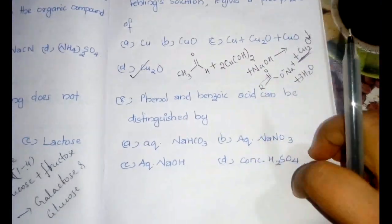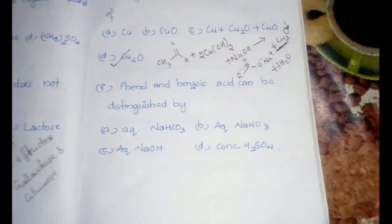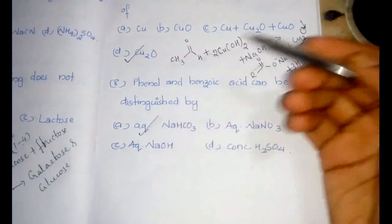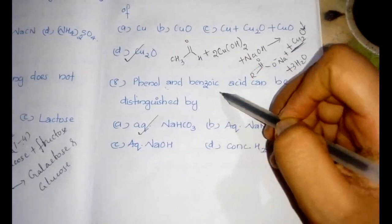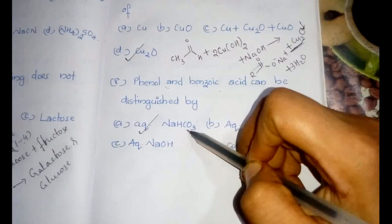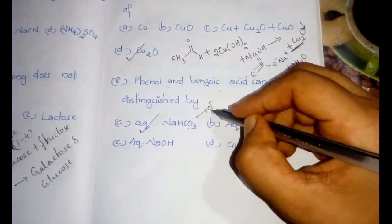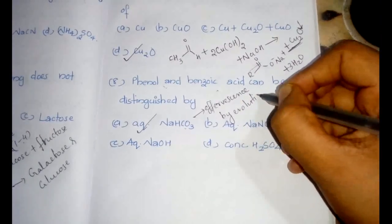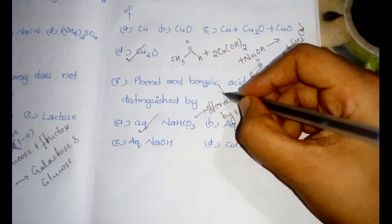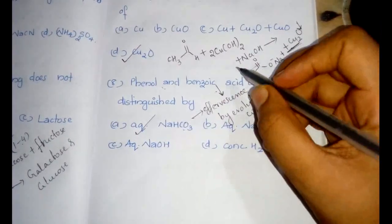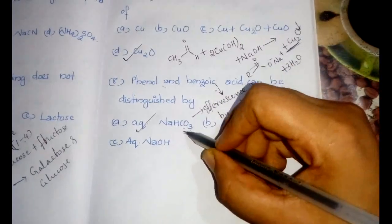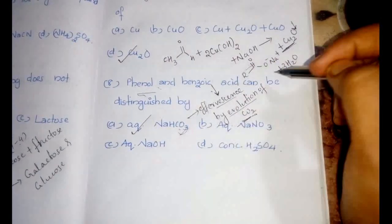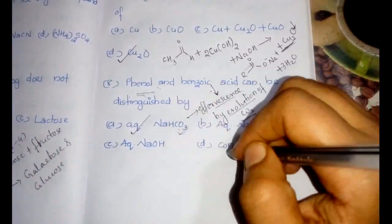The next question is: phenol and benzoic acid can be distinguished by? There are multiple tests, one of which being the reaction with aqueous NaHCO3. What will happen when phenol and benzoic acid are reacted with aqueous NaHCO3? Benzoic acid will be giving effervescence by evolution of CO2. Please remember this because the question can be asked: why does benzoic acid give effervescence when reacting with aqueous NaHCO3? In that case you have to remember it is because of the evolution of CO2. But in case of phenol it does not give effervescence and therefore benzoic acid and phenol can be distinguished.